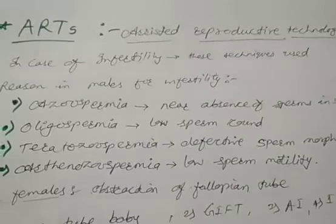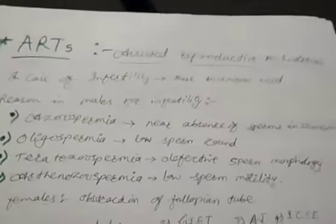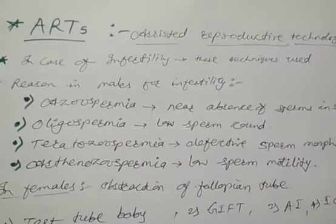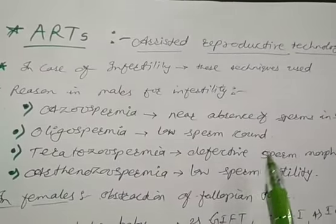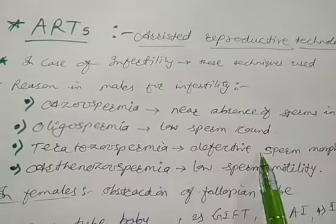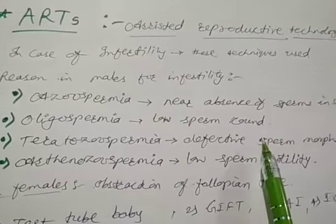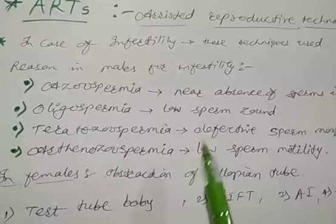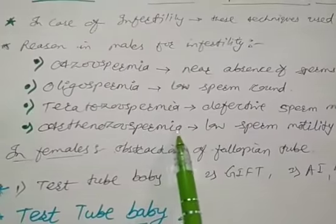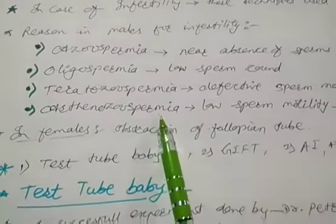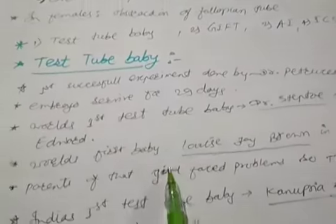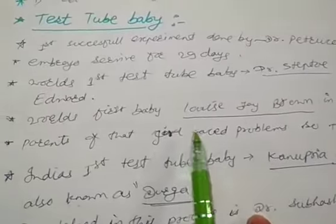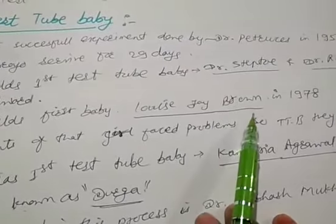Welcome back students. In the previous video we have seen about ART, that is Assisted Reproductive Technologies. We covered techniques for couples suffering from infertility problems, including oligospermia and azoospermia situations. We also saw about the world's first test tube baby — her name is Louise Joy Brown.